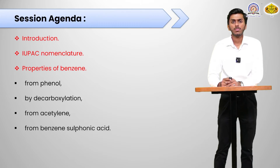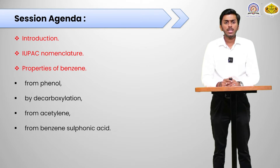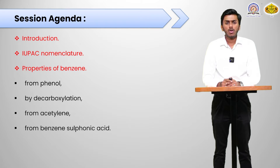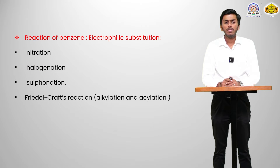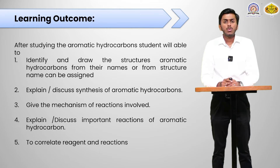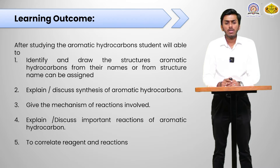Session agenda: in today's lecture we are going to learn about IUPAC nomenclature of aromatic hydrocarbons and its basic introduction, then properties of benzene, preparation of benzene from phenol by decarboxylation, from acetylene, and from benzene sulfonic acid. We will end today's session with reactions of benzene — electrophilic substitution: nitration, halogenation, sulfonation, and Friedel-Crafts reaction, that is alkylation and acylation.